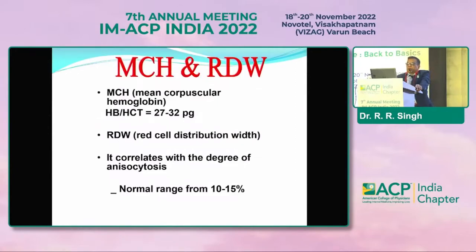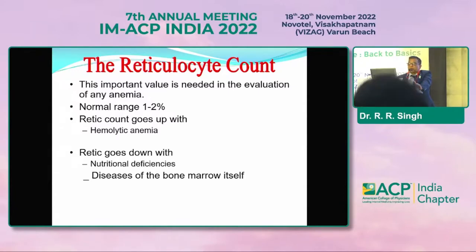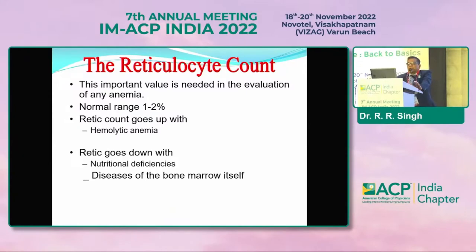MCH values are 27 to 32 picograms. RDW, which we call red cell distribution width, is also very important — it relates to the degree of anisocytosis. Reticulocyte count is often missed; it is normally one to two percent. When it goes up, there are features of hemolytic anemia. When it goes down, it may indicate nutritional deficiency or some bone marrow ailment.